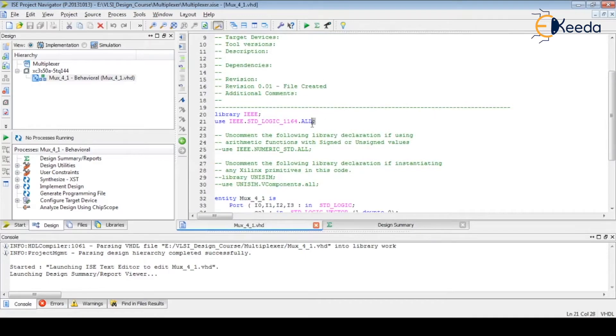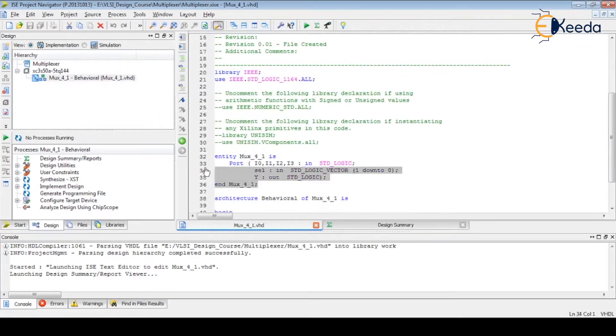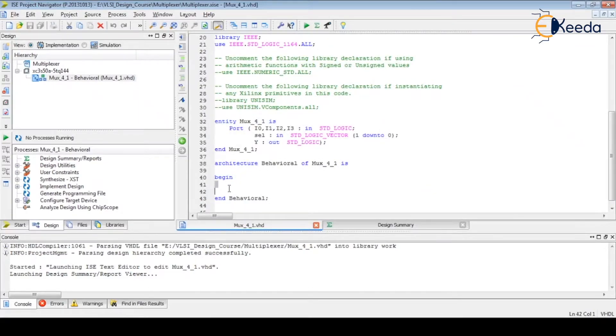So as usual it will declare predefined libraries, the entity declaration. And here we have to write our logic. Now to write a multiplexer program, we can use again, there are two concurrent statements: when else and with select. We are focusing right now on these statements only to get much more understanding of these concurrent statements, and we should be used to these statements.